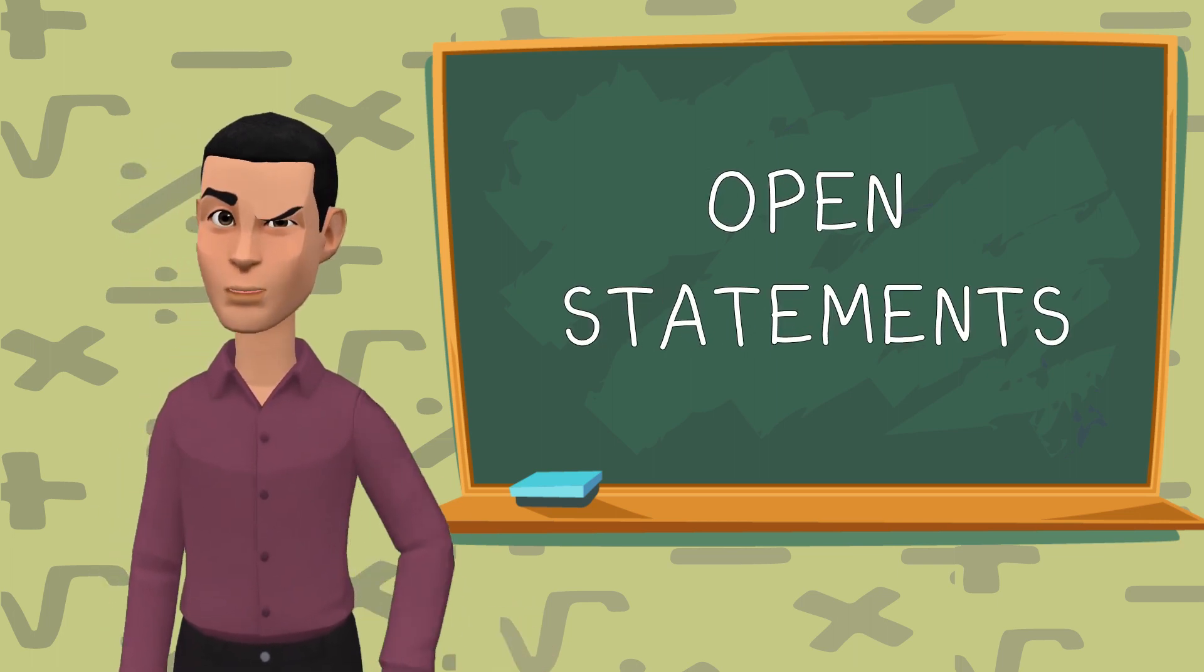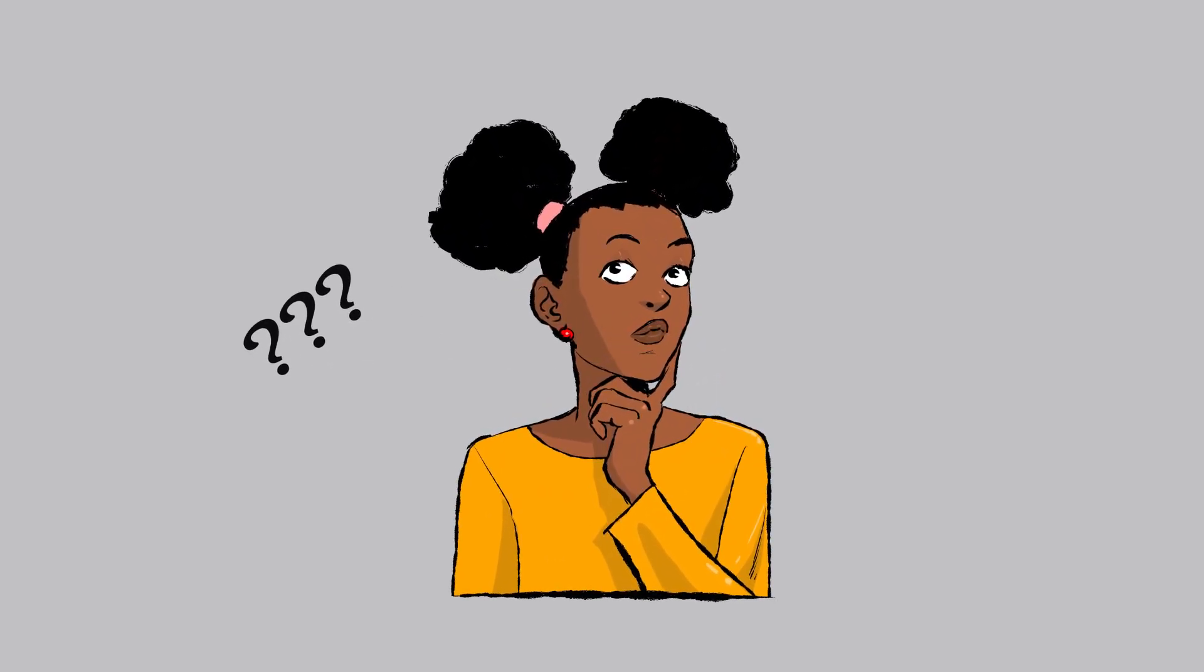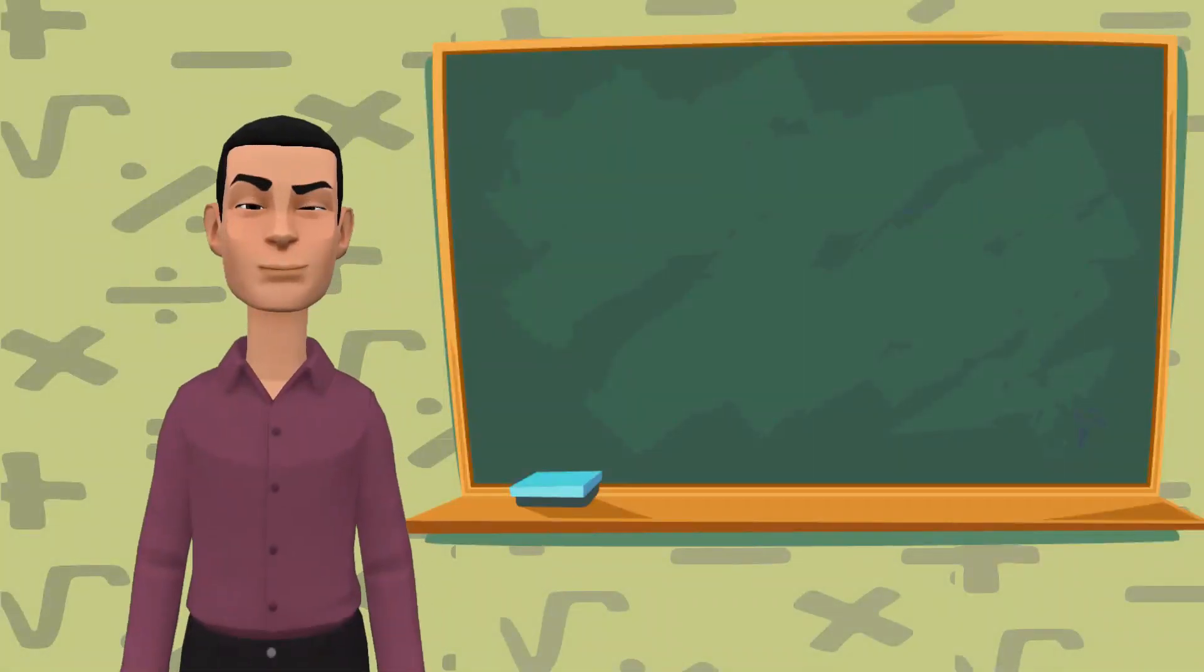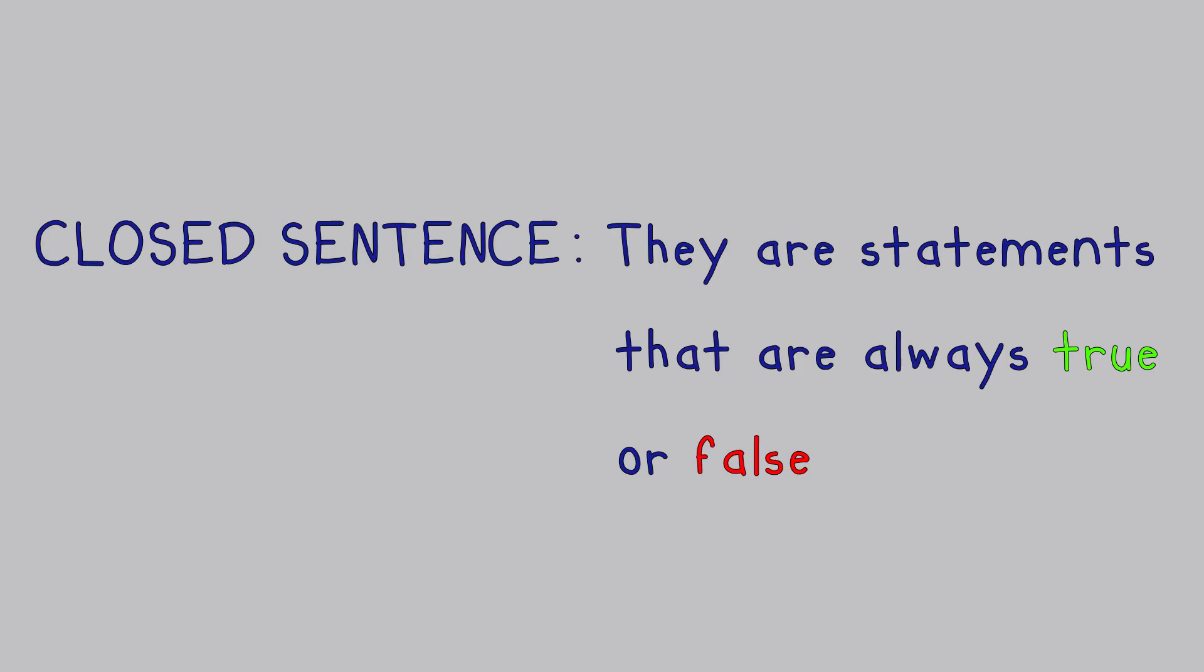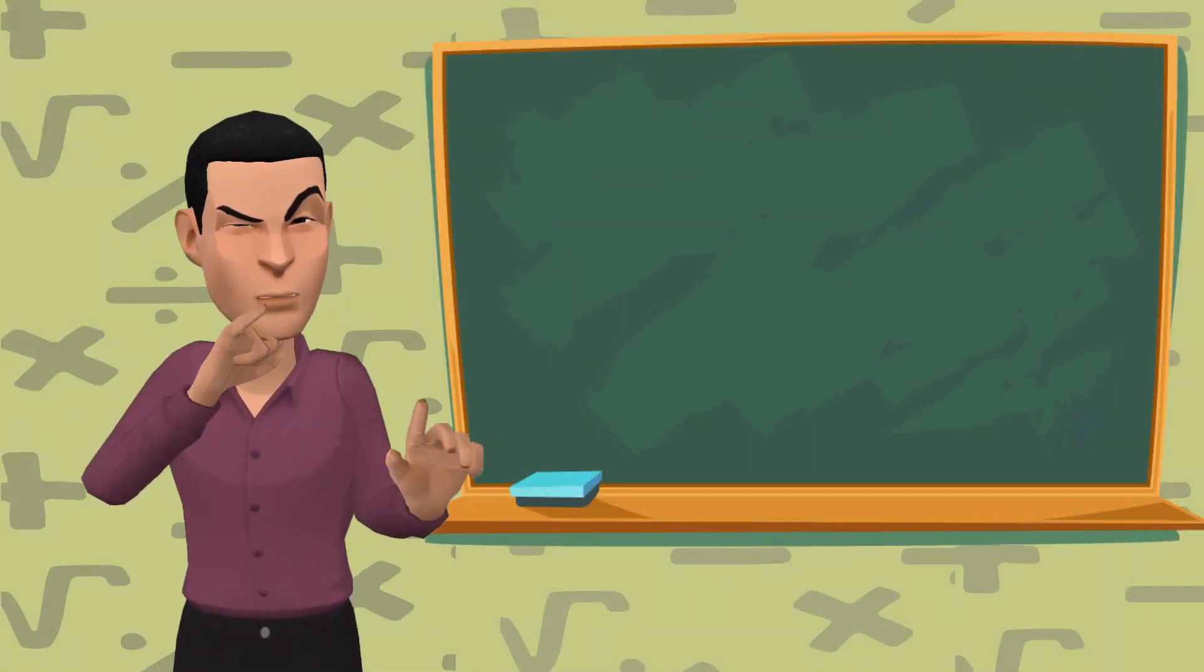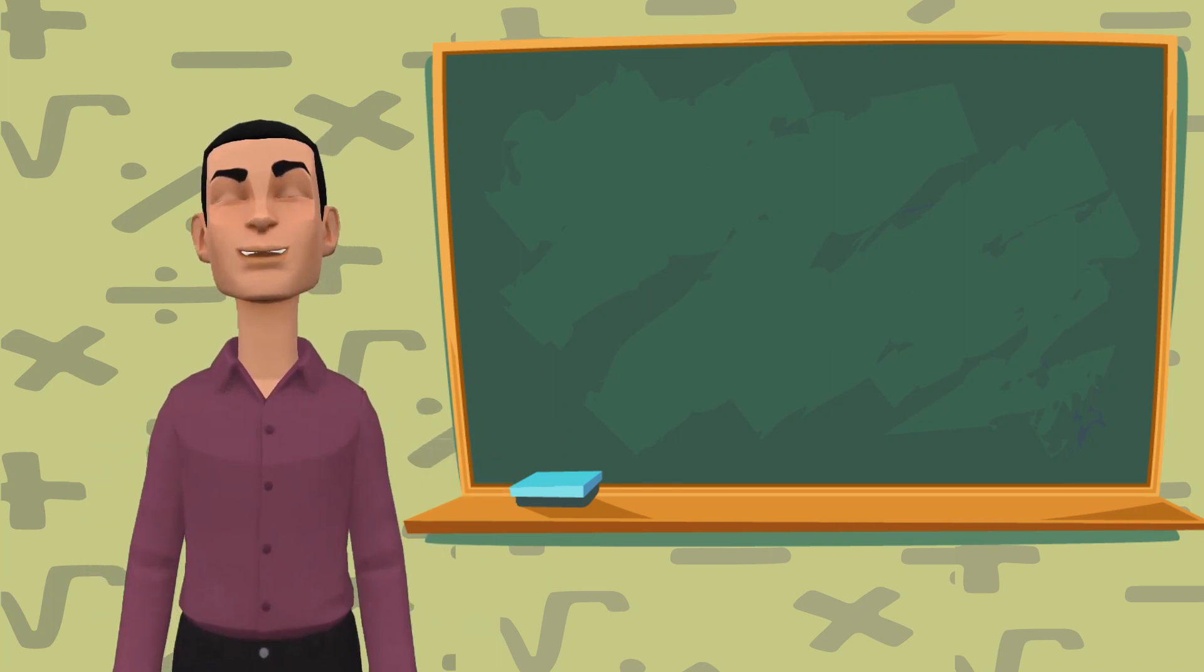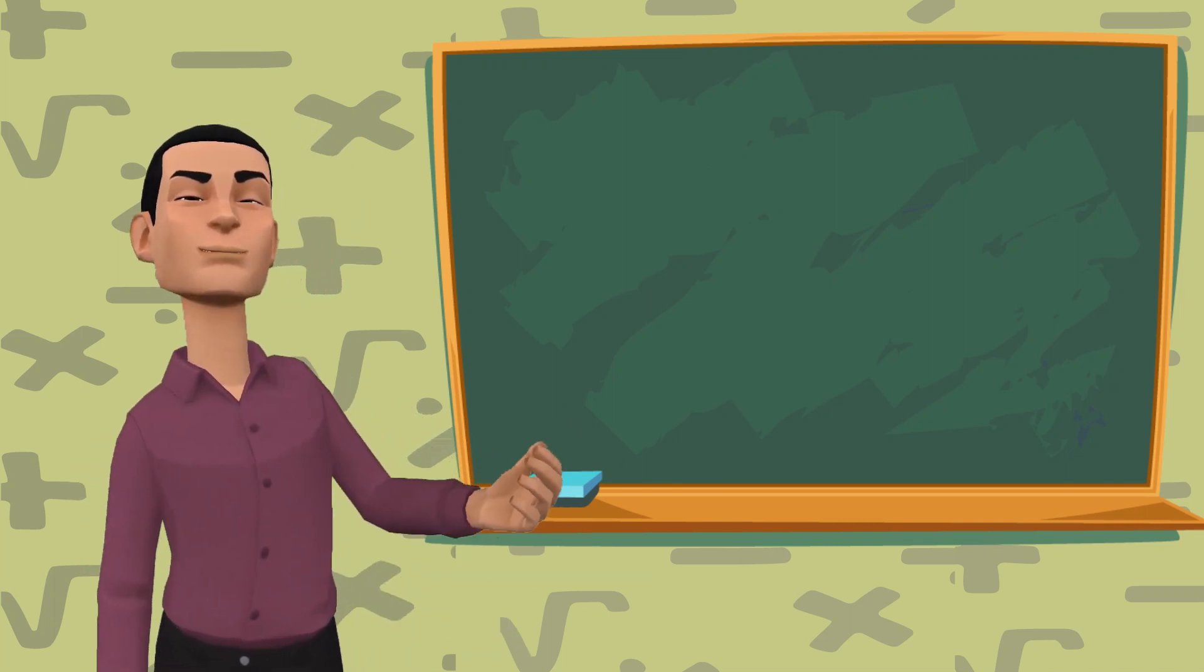Now, what is the closed sentence or closed statement? It's simple. A closed sentence is always true or always false. For example, '19 is an odd number' is always a true statement. '11 is an even number' is always false. In closed statements, the values of things are always known.